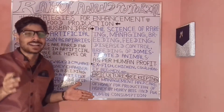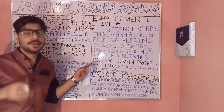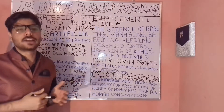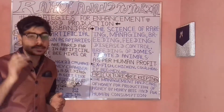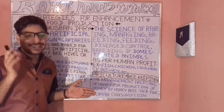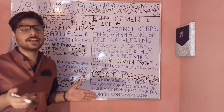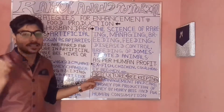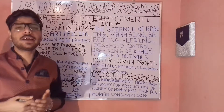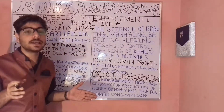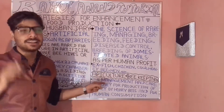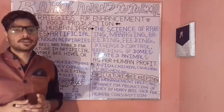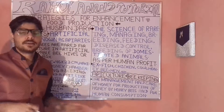Here we are going to study about animal husbandry. Animal husbandry is the branch of science in which we deal with the rearing, feeding, and breeding of disease-free domesticated animals for human benefits and profit. Examples include cows, hens, chickens, camels, and goats, as you can find here on the board.